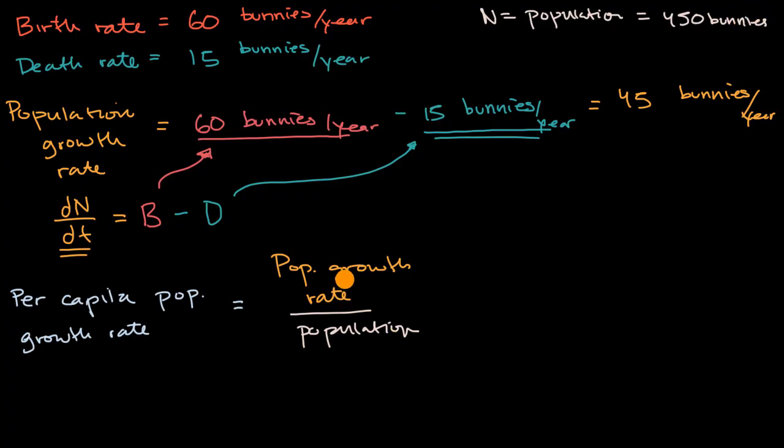Our population growth rate is 45 bunnies per year. And that's going to be for every 450 bunnies. 450 bunnies. 450 bunnies. Which will get us to 45 divided by 450 is 0.1.